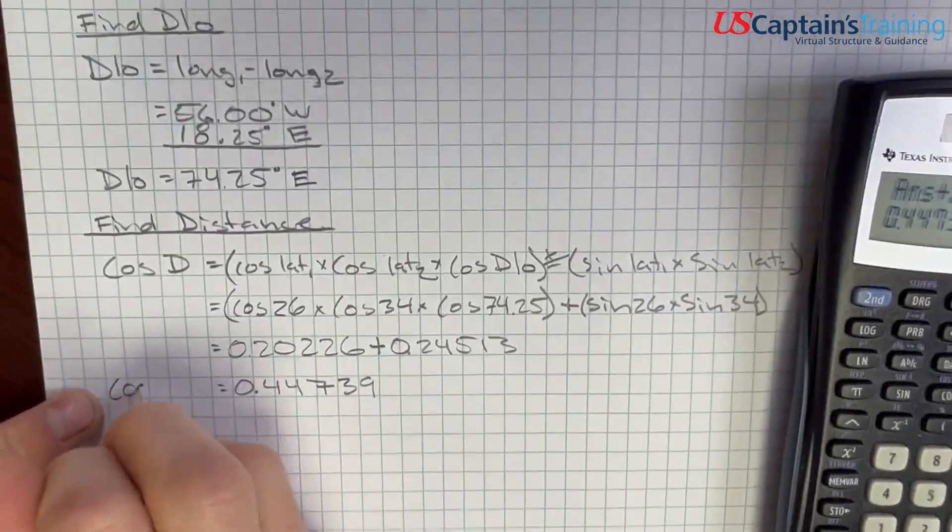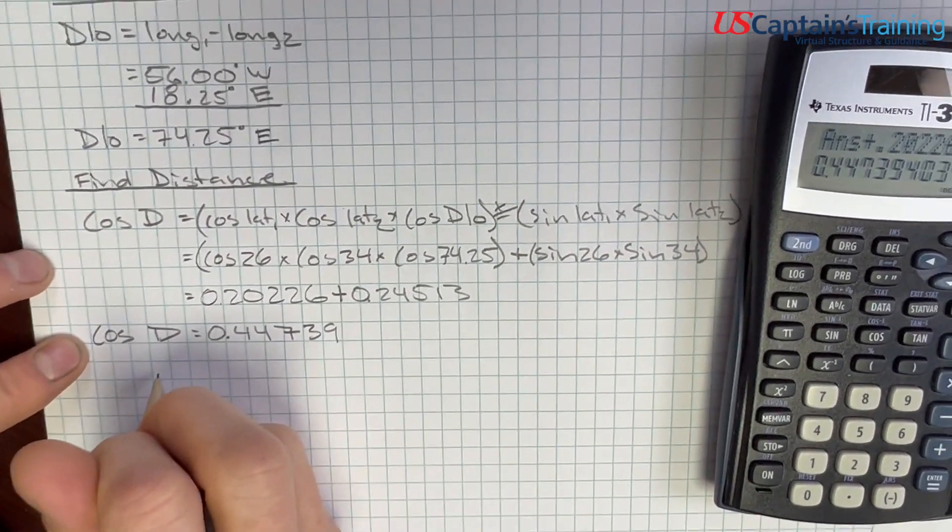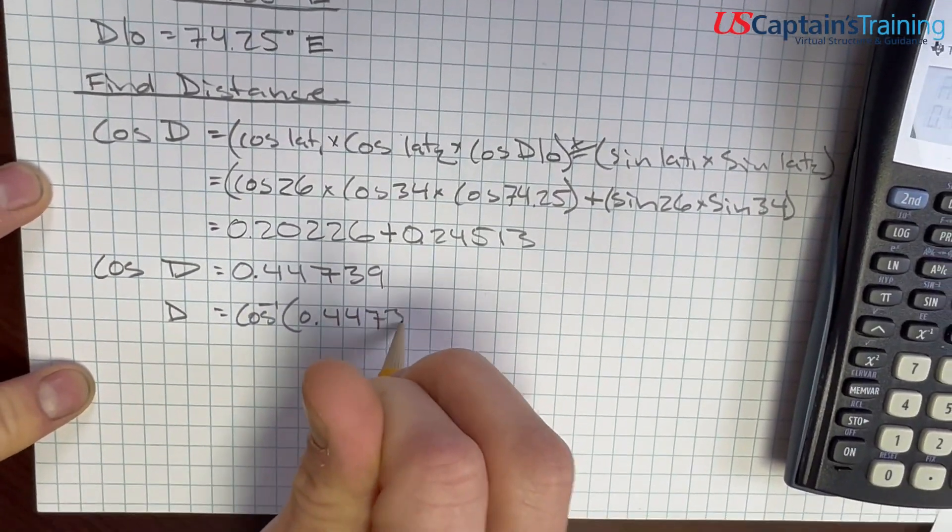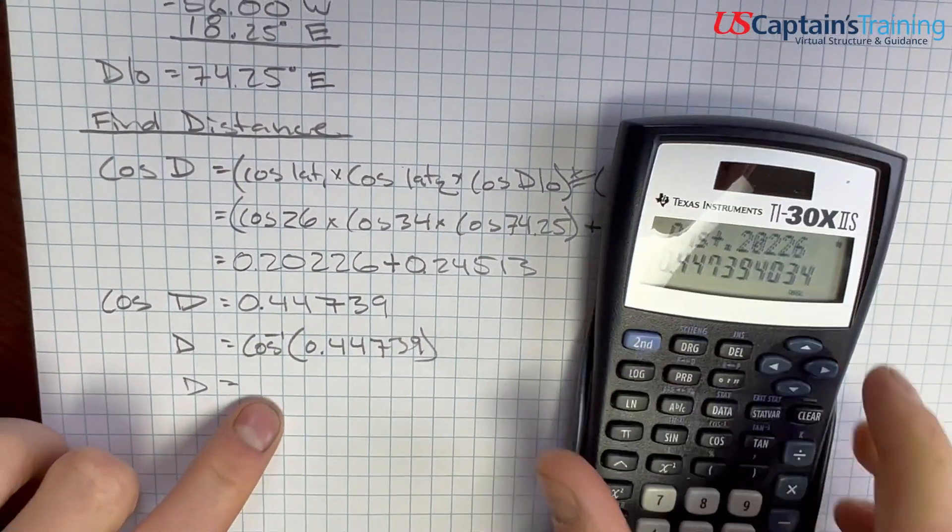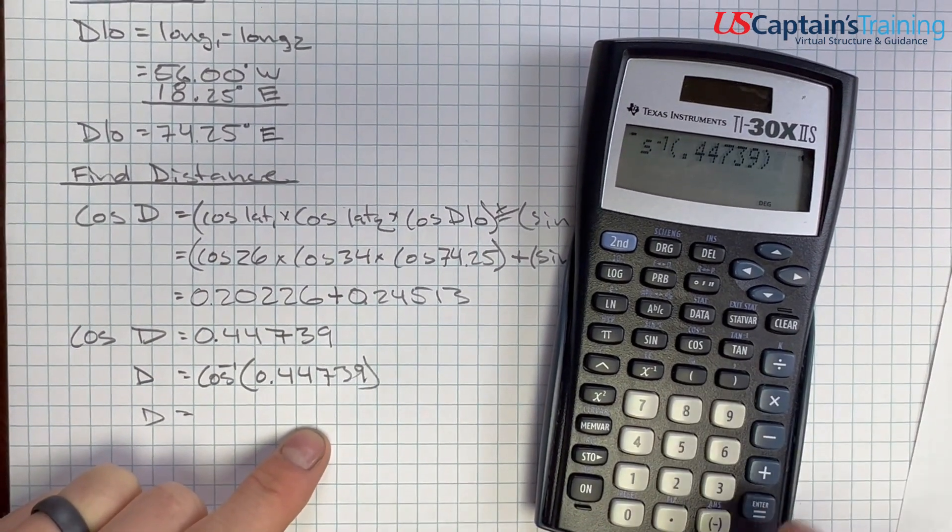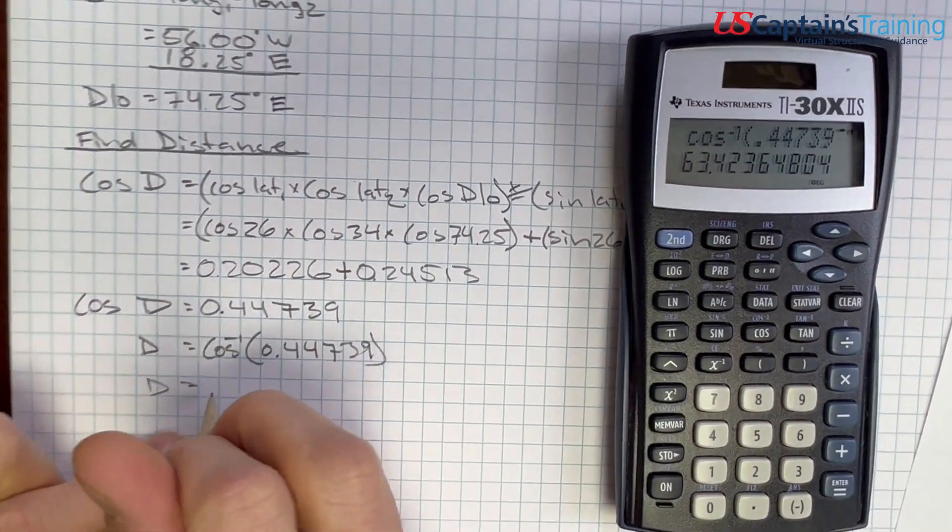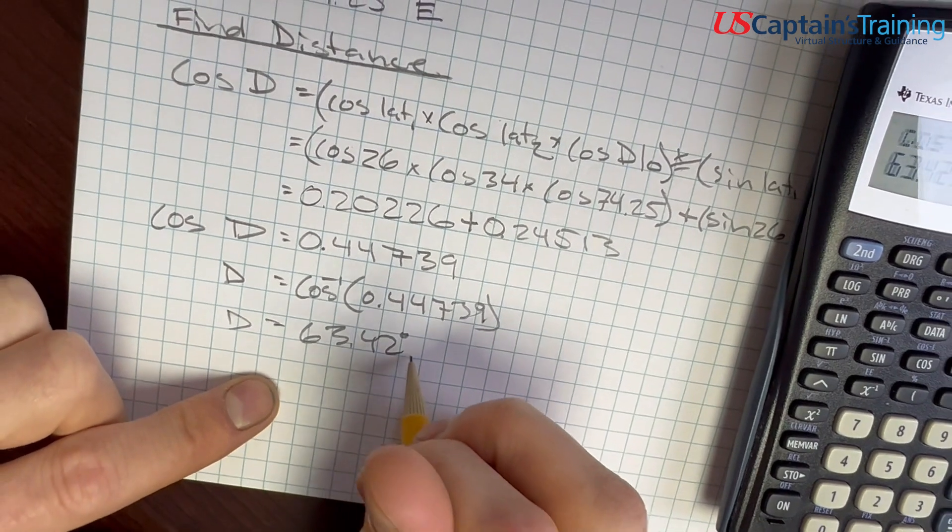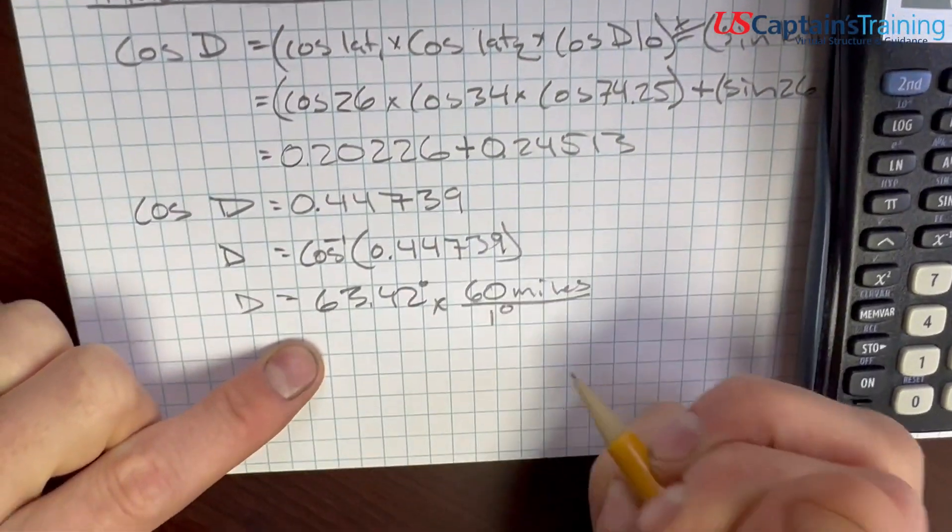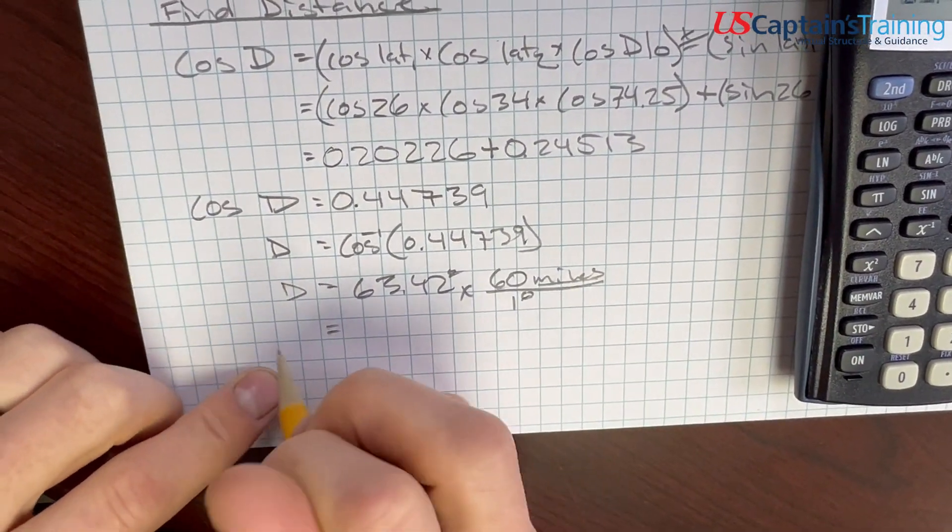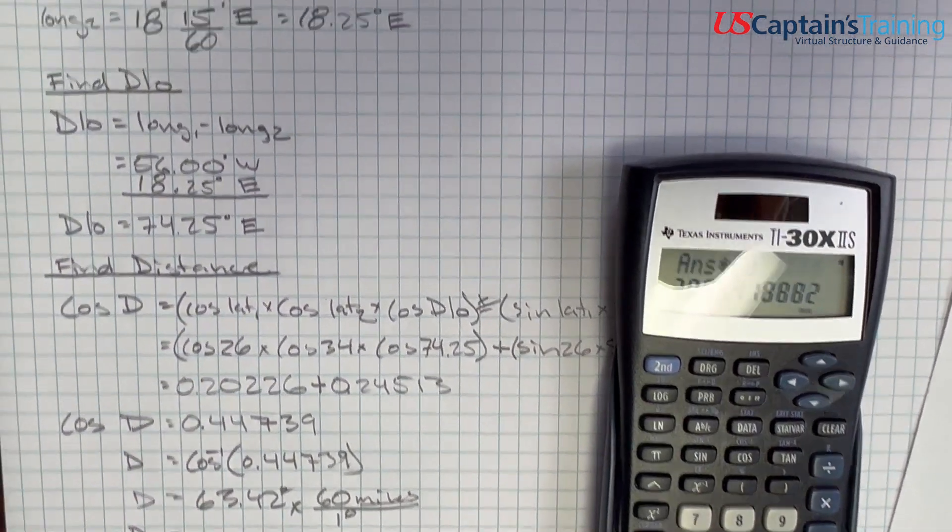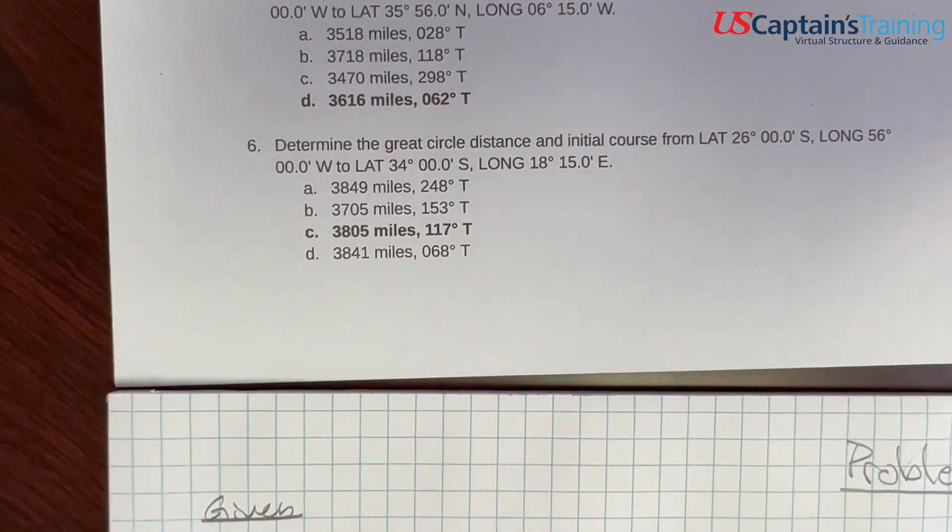We need to just get distance, so distance equals the inverse cosine of 0.44739. This is going to come out in degrees too. Second, inverse cosine, 0.44739, enter: 63.42 degrees. We need this to be in miles because in the problem it's in miles. We get 60 miles per one degree, so distance was 63.42 times 60 equals 3805 miles. We got it: 3805 miles.